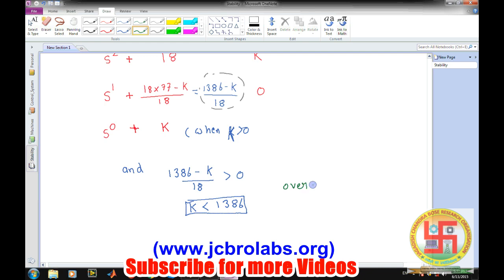So overall in this range between 0 to 1386, if this is the case our system will remain stable. If K is greater than 1386 then our system will become unstable. So overall for stability, this is how we define the range of K for the stability concern.